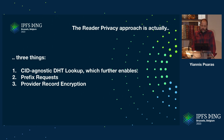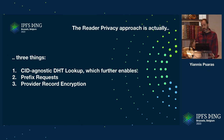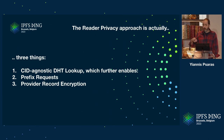The reader privacy upgrade is actually three things. The first is a CID-agnostic DHT lookup, which is different from what we do today where the CID is in plain sight and everyone can see what CID is being requested. The second part is that we can do prefix requests — not asking for the whole thing, but a subset. And then we have provider record encryption: the provider record right now is in plain sight, but with this approach it's going to be encrypted using the CID itself.